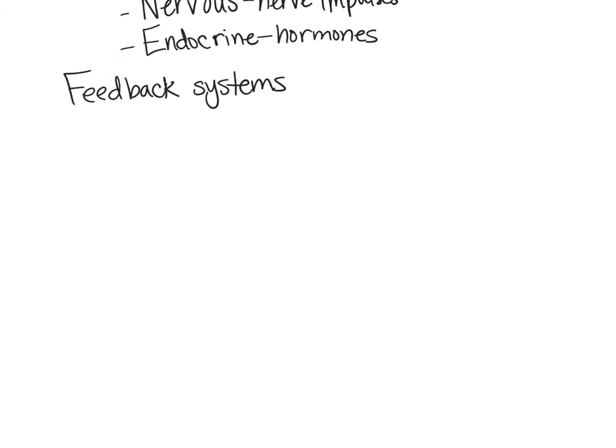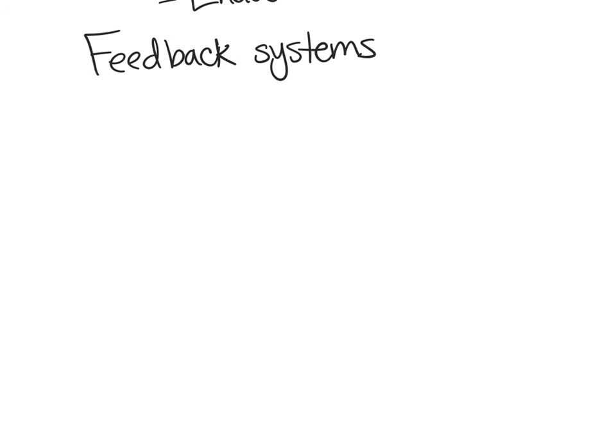Our feedback systems are going to be our negative feedback system and our positive feedback system. A feedback system is a cycle of events where we monitor the status of a body condition, evaluate it, and then change it.